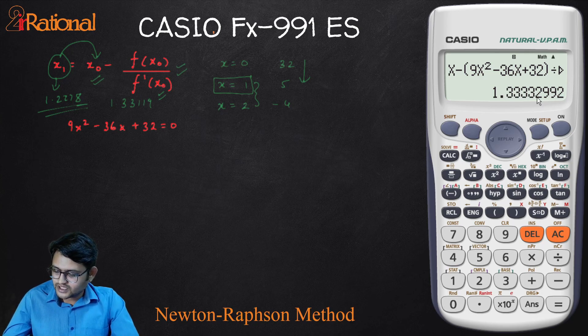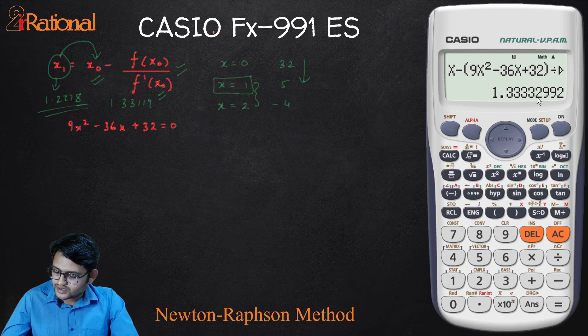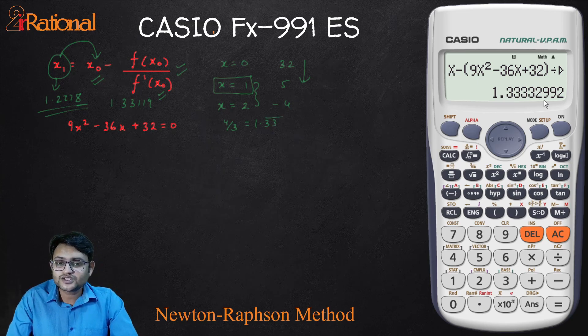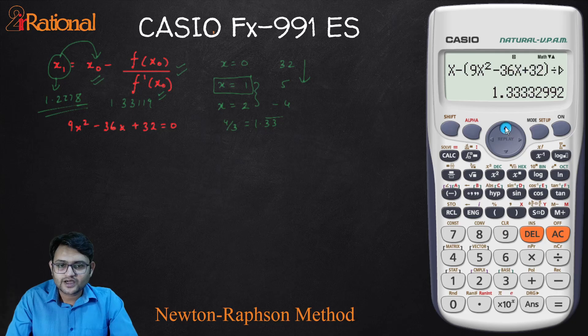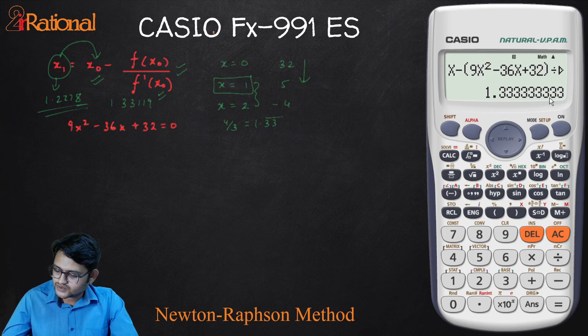Because I have made this equation, I know the answer, one of the roots is actually 4 by 3. That would be 1.33 recursive. And you can see we are reaching to that particular value. You can use this again. You can go up, equal to and again go up, equal to and here you go. We have reached this 1.33 recursive.